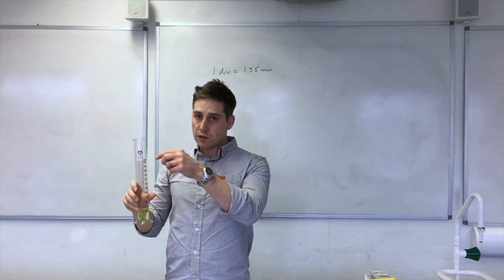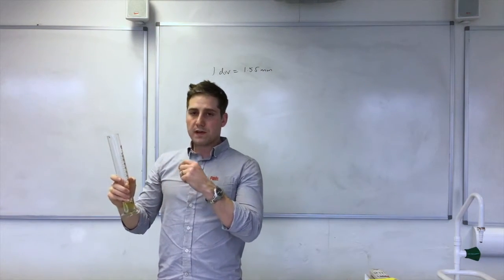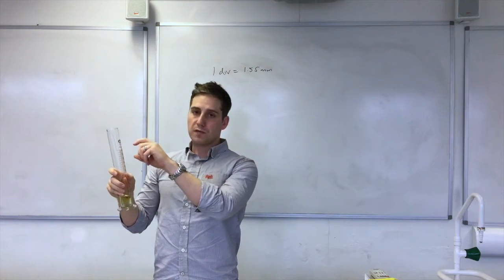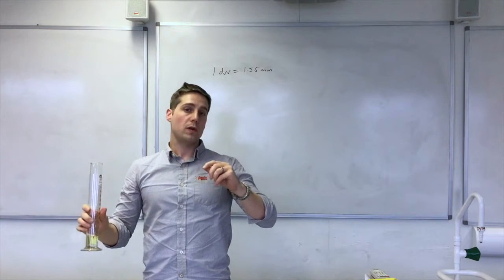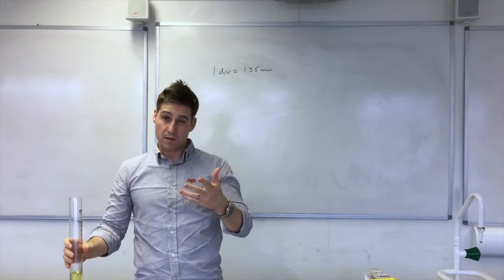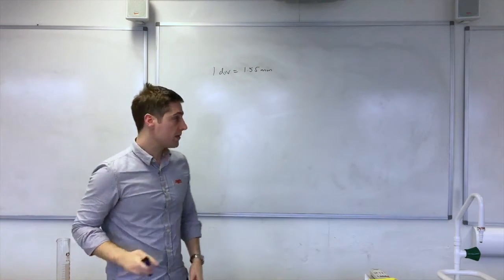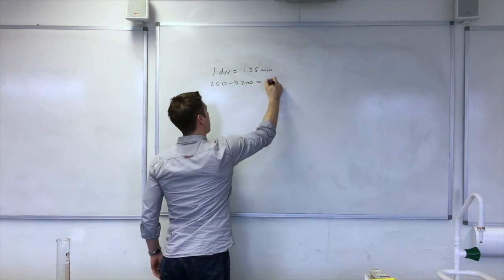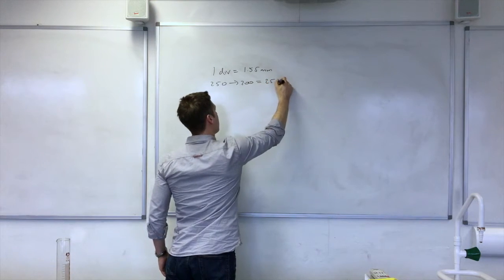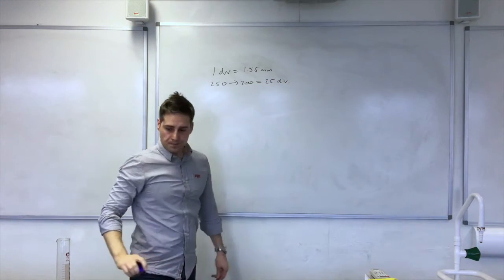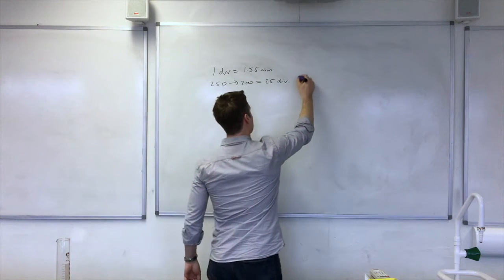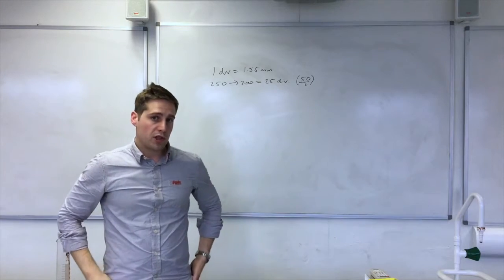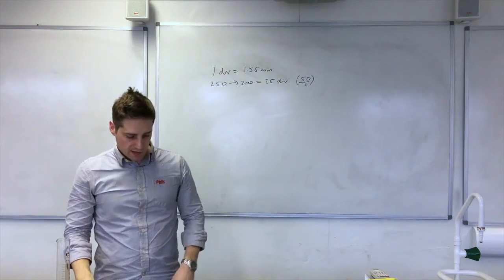This scale goes up in 2s, so if I take a measurement from 250 to 200, then that's a change of 50 millimeters but only 50 over 2, so 25 divisions. So going from 250 to 200 is 25 divisions, which is 50 over 2. So in the calculations that I'll show, that's why I've divided by 2.